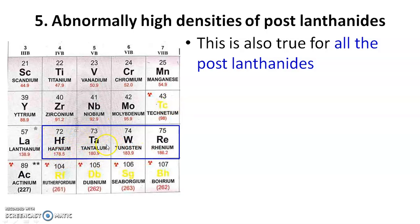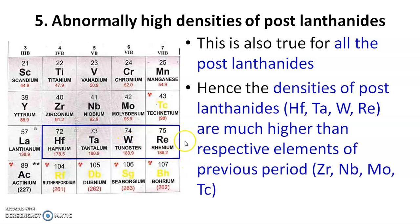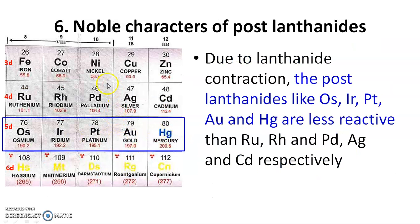The same is true for all post-lanthanides — the density of hafnium, tantalum, tungsten, and rhenium is substantially higher than that of zirconium, niobium, molybdenum, and technetium respectively, all because of lanthanide contraction. The last effect is the noble character of post-lanthanides: due to lanthanide contraction, post-lanthanides like osmium, iridium, platinum, gold, and mercury are less reactive than their 4d counterparts ruthenium, rhodium, palladium, silver, and cadmium.